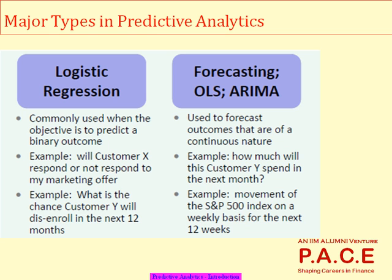There are various approaches for doing predictive analytics, and here our focus is on two main aspects. One is regression-based — both logistic and linear. Linear regression helps us predict what the value will be in the future, or what the output value will be given certain inputs. Basically, if X is dependent on A, B, and C, we frame a relationship between X and ABC so that if I know ABC, I should be able to predict X. That is the typical linear regression model.